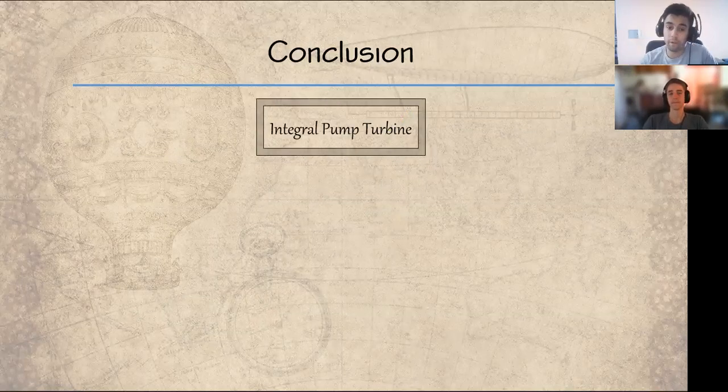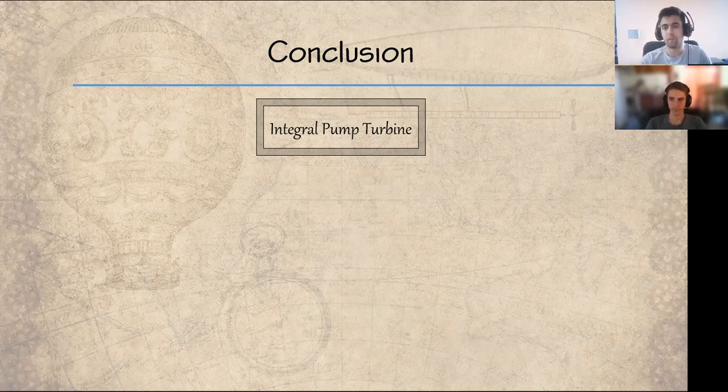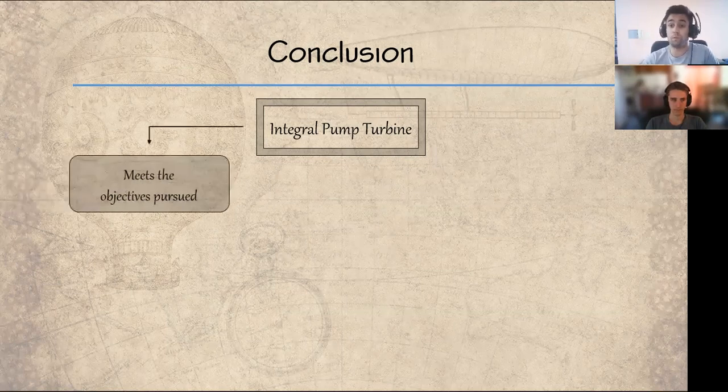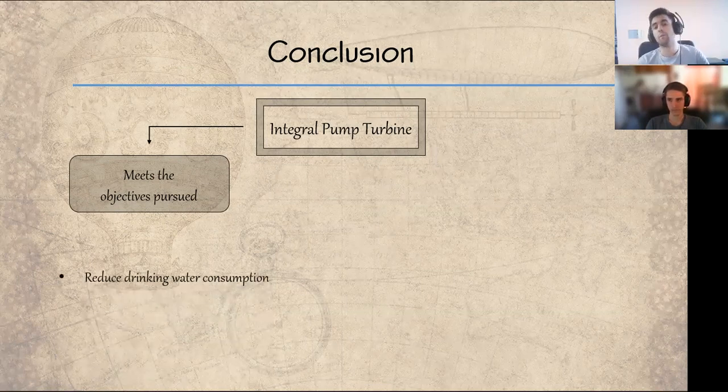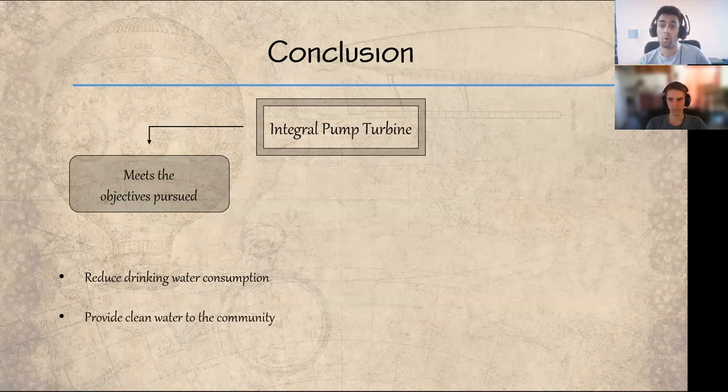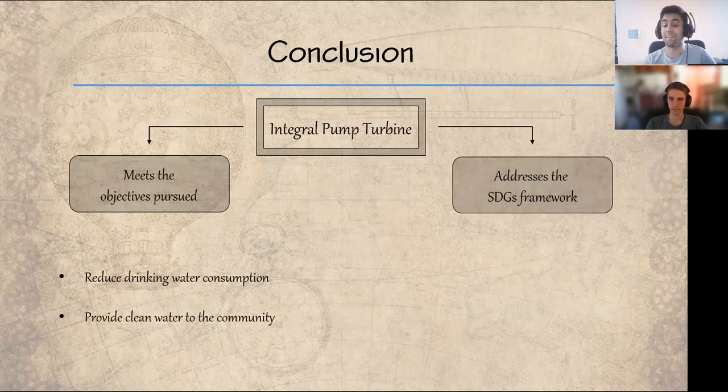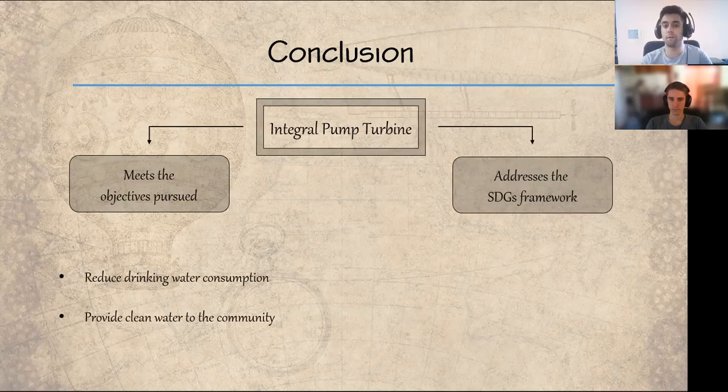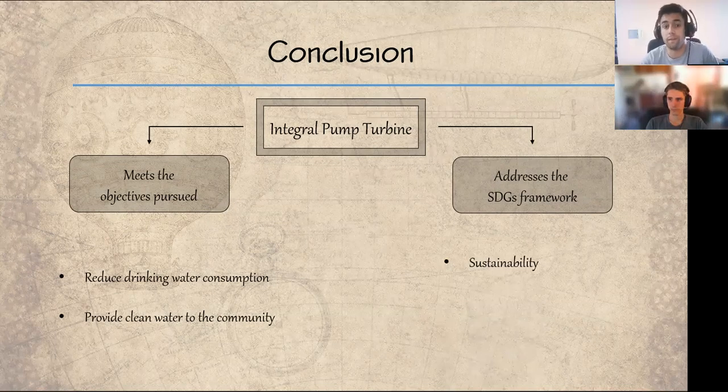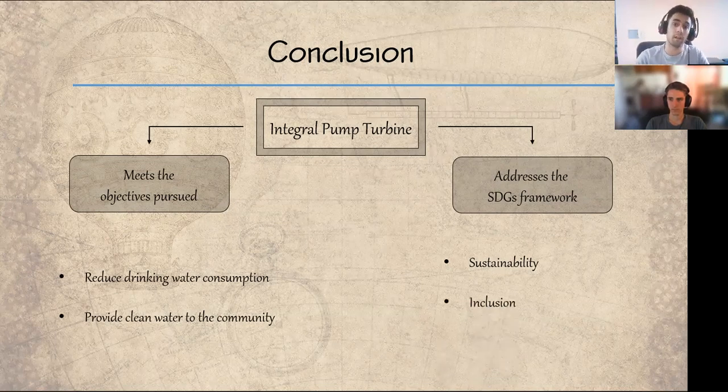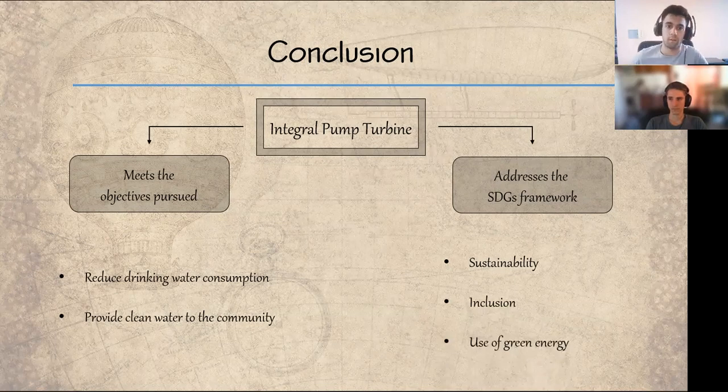There are two principal topics to conclude this presentation. First, it should be noted that the integral turbine pump meets the objectives proposed at the beginning in terms of reducing the consumption of drinking water and providing clean water to the community. On the other hand, this project addresses the framework of the sustainable development goals. It is a sustainable and inclusive machine that uses green energy and does not produce pollution effects. In this way, the community is healthy and our future is taken care of.